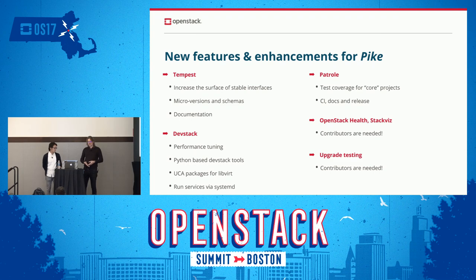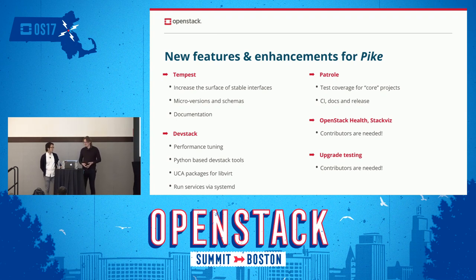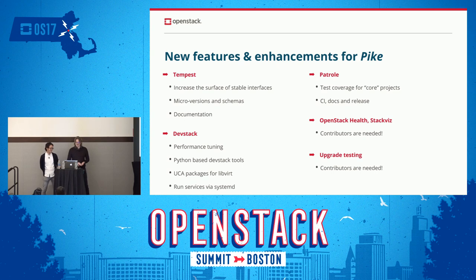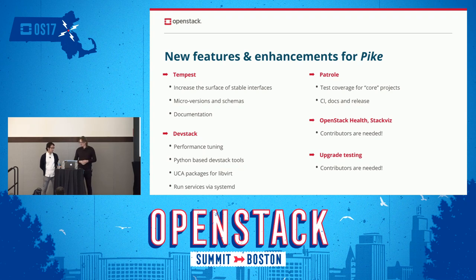We started running services under systemd as opposed to screen, which brings a usability benefit in terms of reading and filtering logs when you're developing. A core new feature is Patrole — it's a new service. One of the main things is building test coverage for the core projects: Keystone, Glance, Nova, Cinder, Neutron, and Swift. Because it's a new project, you have to set up the repository, build the CI, set up docs, releases, and jobs. All the administrative things around creating a new project are pretty much in place now. Shout out to the Patrole team for the great job during Pike. Still during Pike and beyond, the idea is to get other projects involved, because Patrole can enforce common handling of authorization failures on policy across projects.